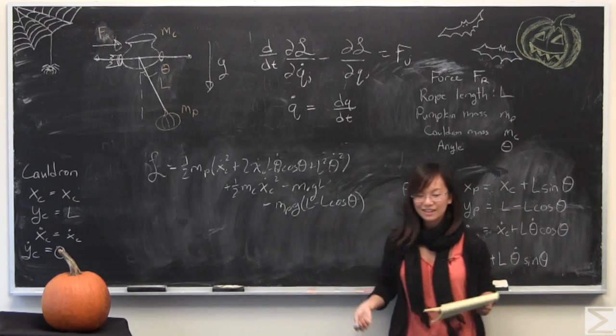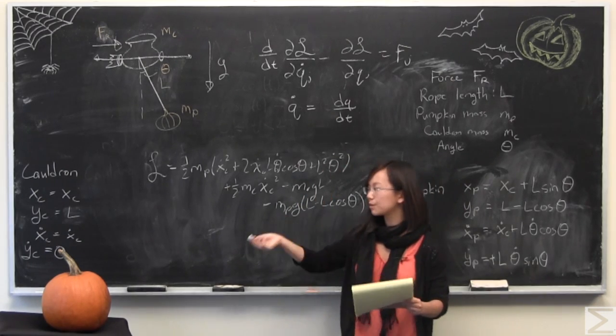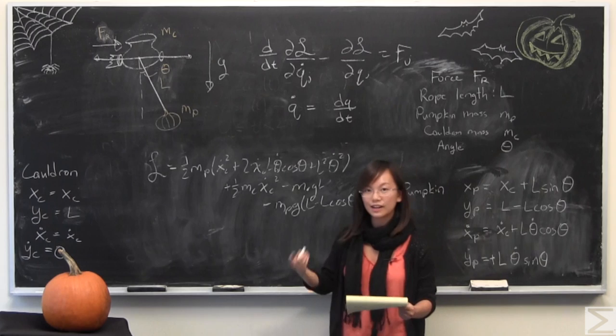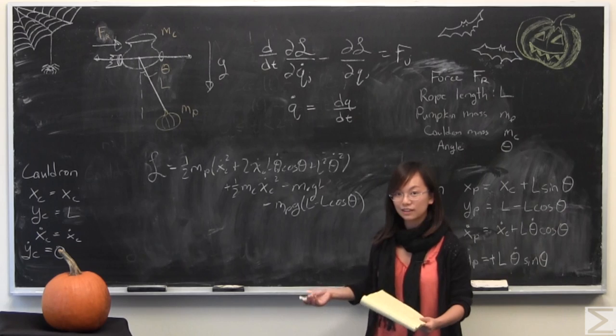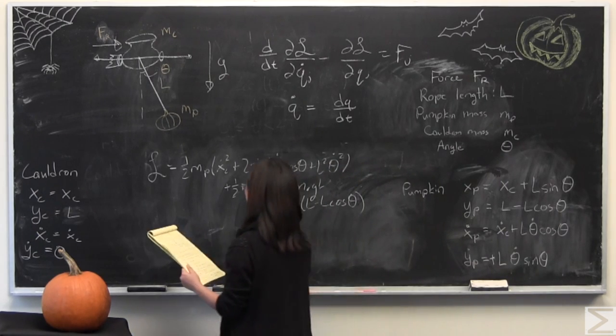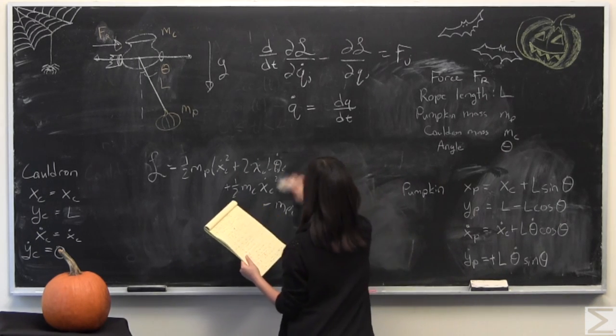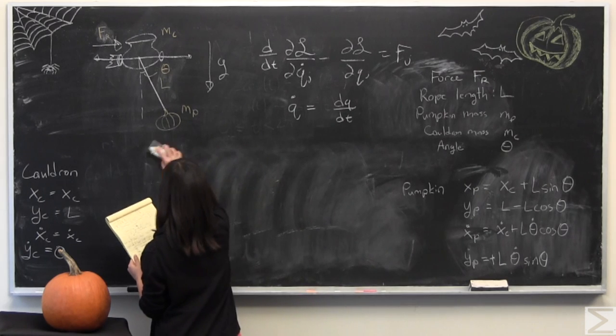It is very long, but it gets simpler because we will take the derivative with respect to theta dot, xc, x dot, and theta, and then we'll put those together to get the Lagrangian equations of motion. I am going to write out what you will get by taking the derivative of L with respect to these.